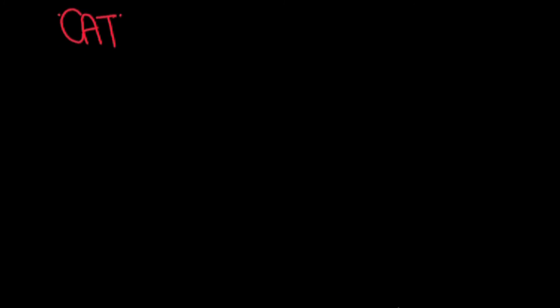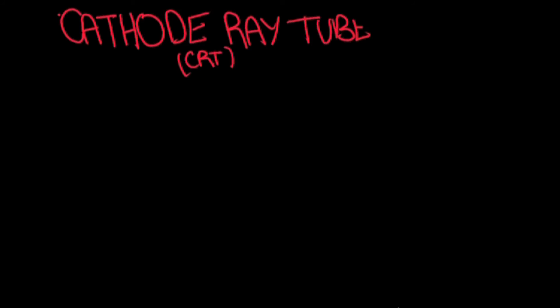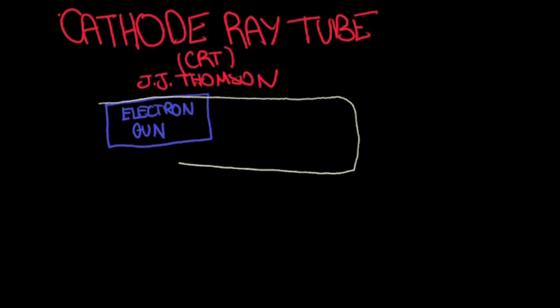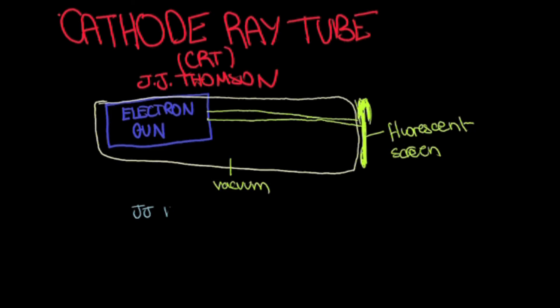Another main advancement in the modern atomic theory came with the cathode ray tube, or the CRT. The main scientist that contributed to the cathode ray tube was JJ Thompson. All you need to know about the cathode ray tube is that it's an electron gun which fires electrons onto a fluorescent screen inside the vacuum. You also need to be aware that JJ Thompson was the first to determine that electrons are particles and he calculated its charge and mass.